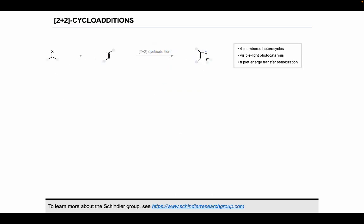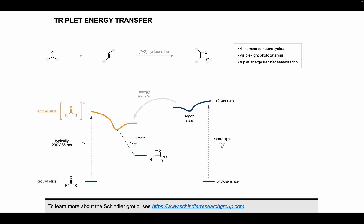In the Schindler group, we're very broadly interested in 2-plus-2 cycloadditions, and more specifically, we've been interested in generating heterocyclic compounds using visible light photocatalysis and triplet energy transfer sensitization. The benefit of using triplet energy transfer is that you can avoid the use of UV light, which is typically used to directly excite a substrate from the ground state to its excited state. Instead, you can utilize a photosensitizer that can absorb visible light to access its singlet excited state, intersystem cross to the triplet state, and then transfer that triplet state to a ground state substrate, directly accessing its reactive triplet state that can then perform the 2-plus-2 cycloaddition with an alkene.